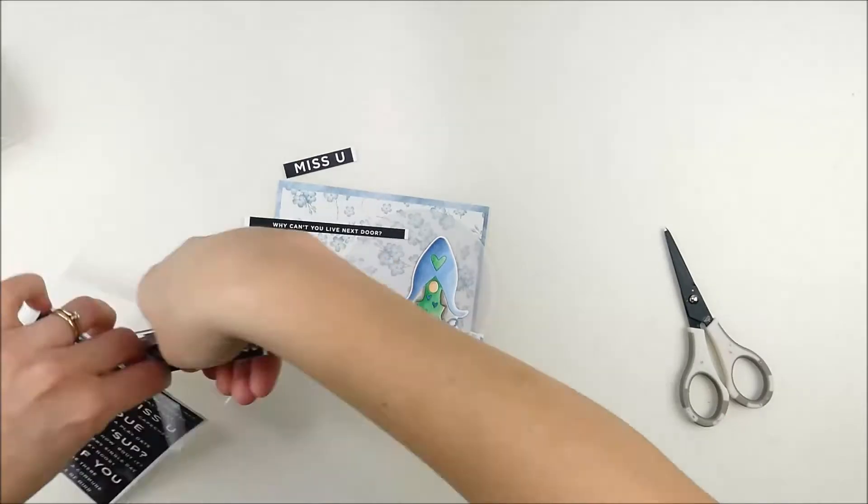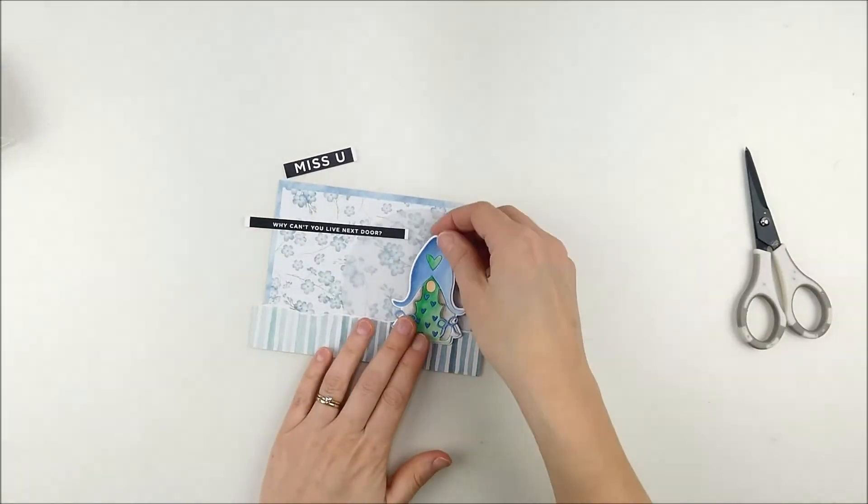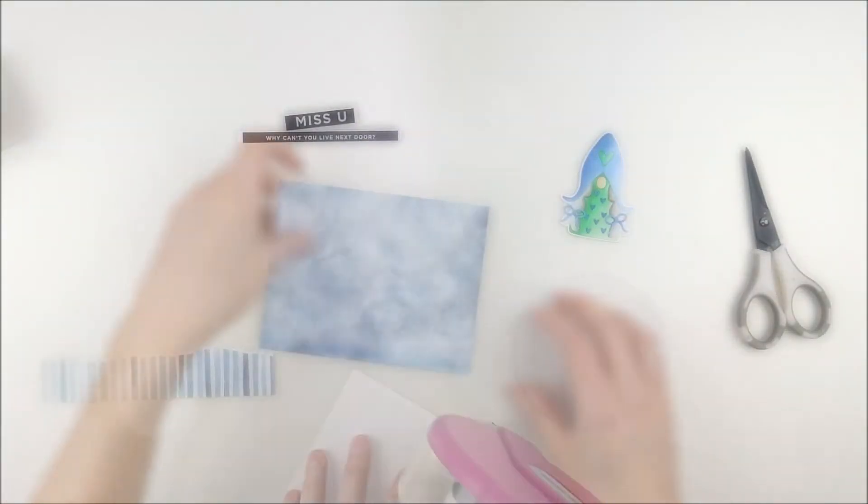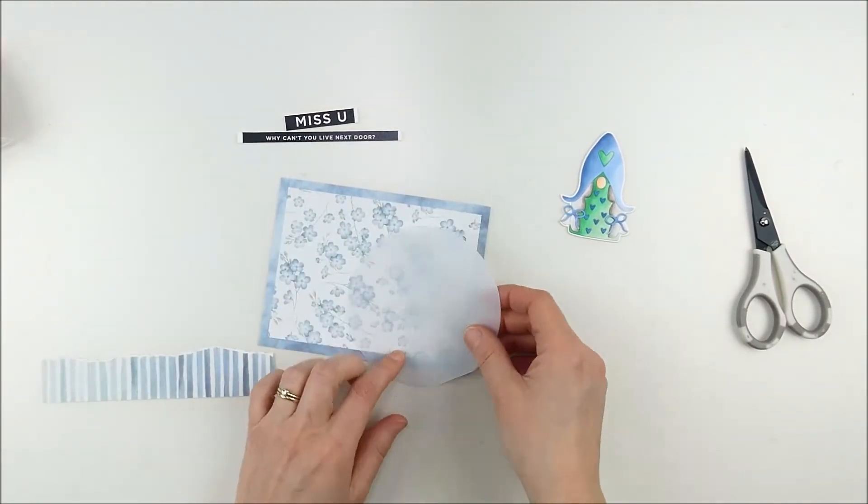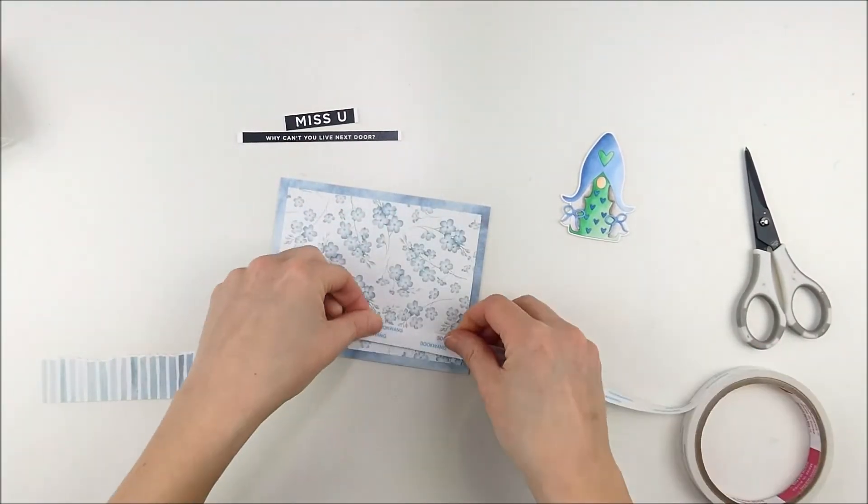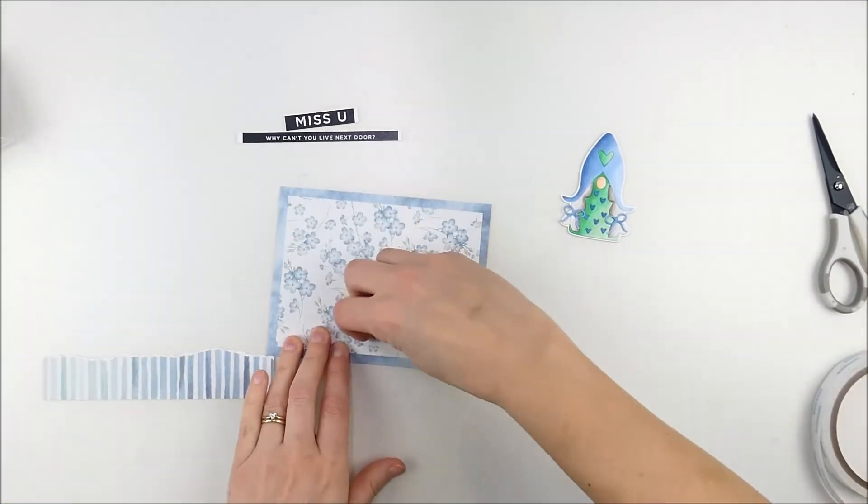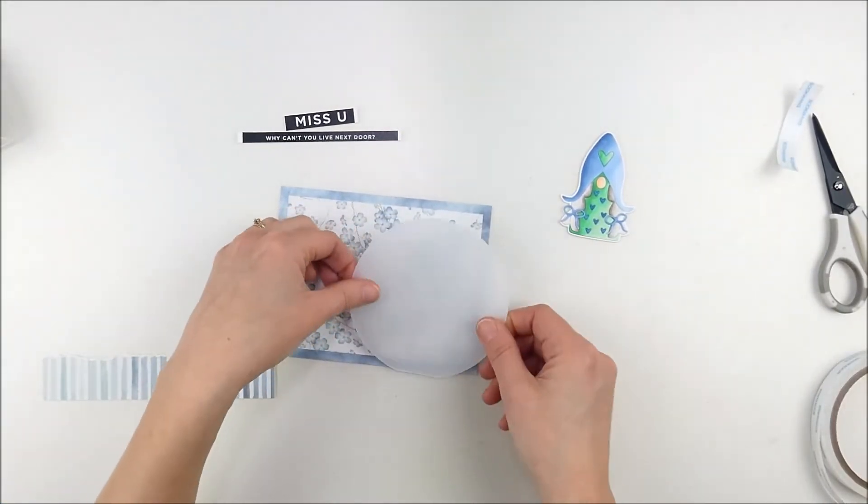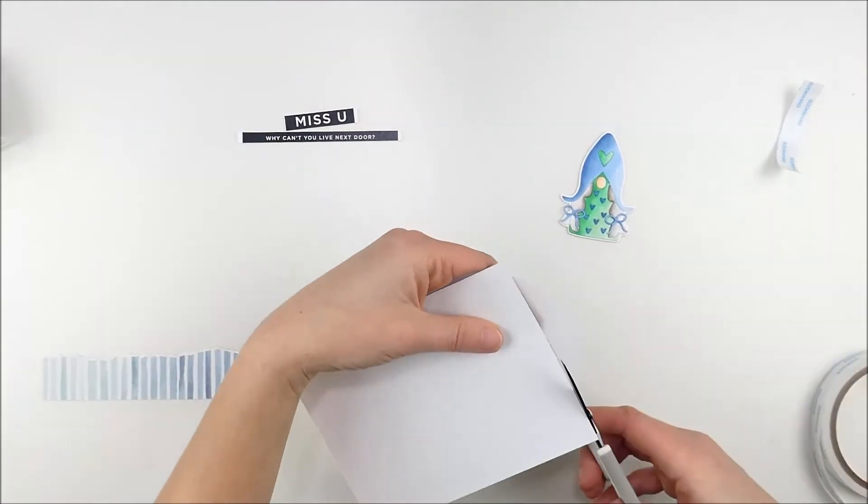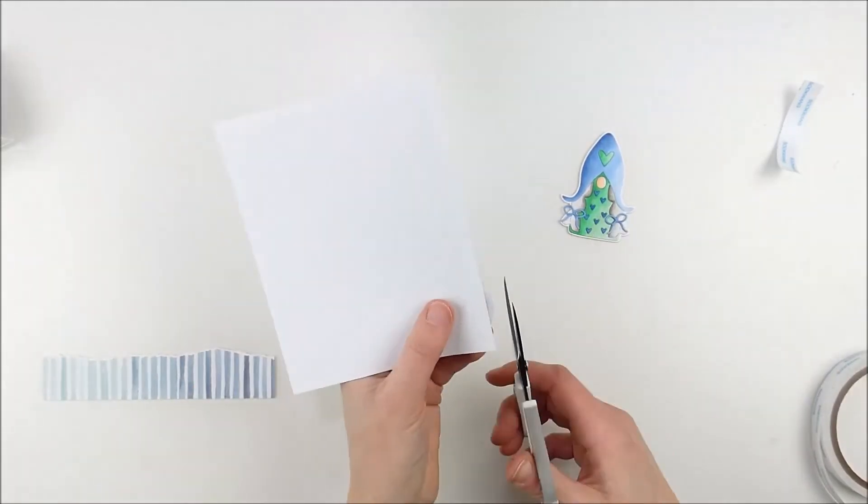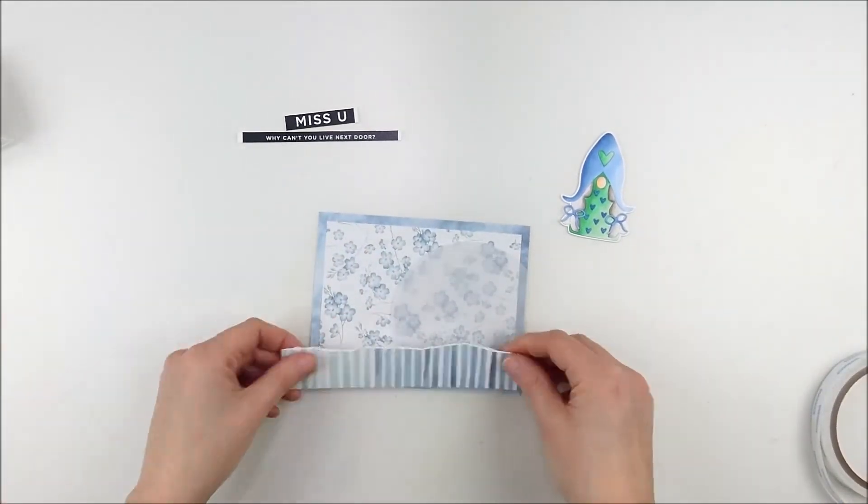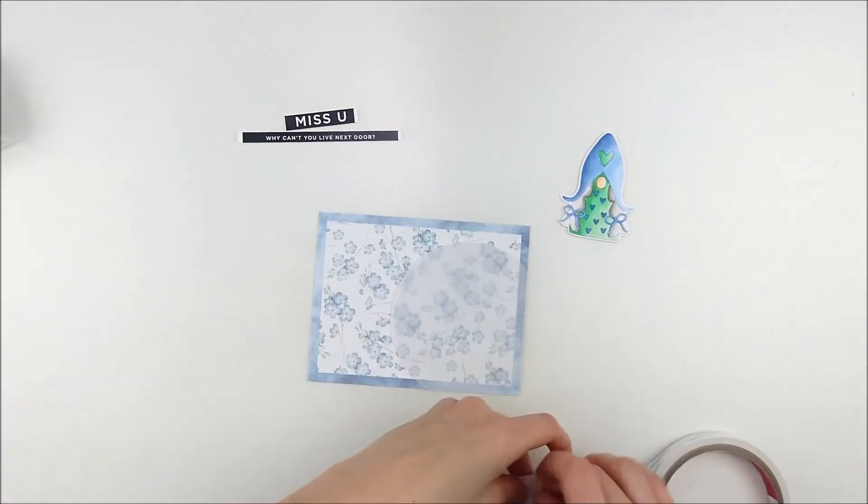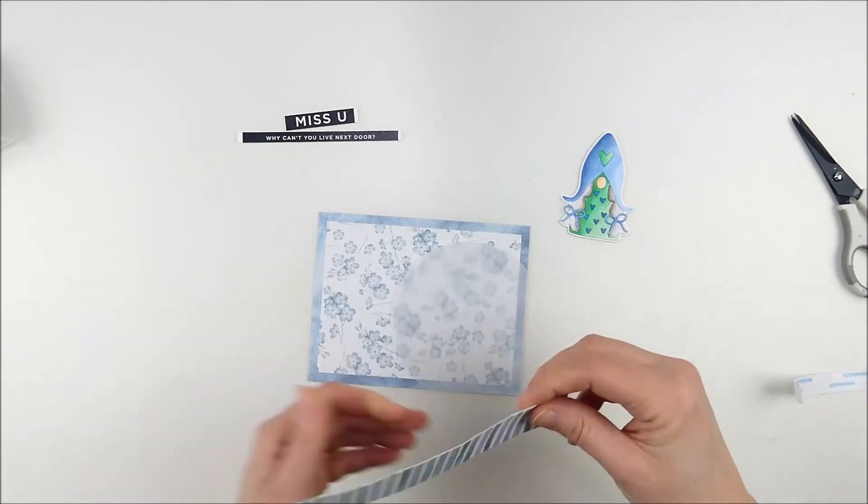All right, and then I'm gonna add some sentiments using the CZ design sentiment strips. These are the reverse miss you set. So I kind of chose a couple of that and then I can start assembling this. I'm attaching the floral paper and then I'm gonna tuck that vellum just with a bit of sturdy adhesive down at the bottom there. The reason I did it there is because my pattern paper, that torn strip I did, is gonna cover that adhesive.